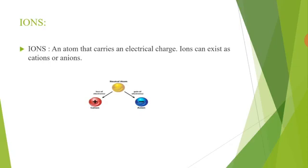But when atom gains one or more electrons, then it becomes a negatively charged ion and this type of ion is called anion.